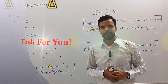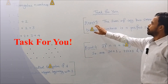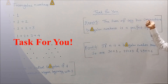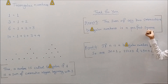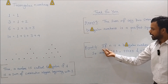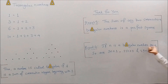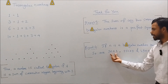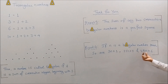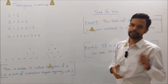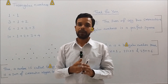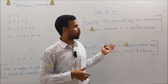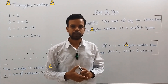As a task for you: prove that the sum of any two consecutive triangular numbers is a perfect square. Also prove that if n is a triangular number, then so are 9n+1, 25n+3, and 49n+6. If you have any problems proving these results, please comment on this video and I will make a separate video on the proofs. Thank you for watching.